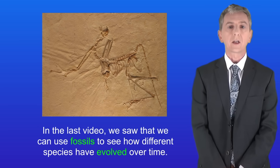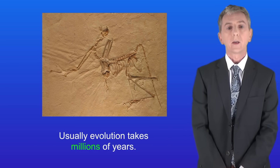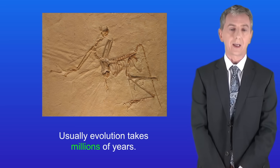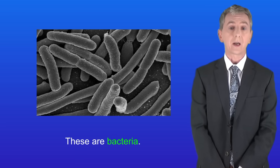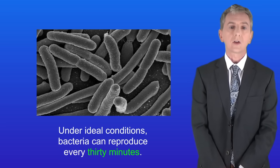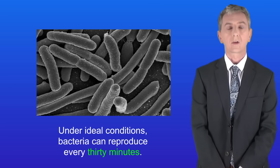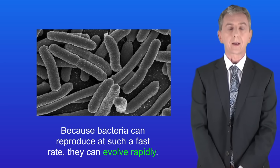In the last video we saw that we can use fossils to see how different species have evolved over time. Usually evolution takes millions of years. However there is one type of organism which evolves extremely rapidly and these are bacteria. Under ideal conditions bacteria can reproduce every 30 minutes, and because bacteria can reproduce at such a fast rate they can evolve rapidly.